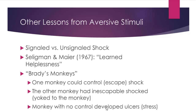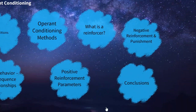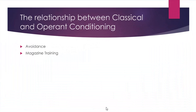Now, some lessons learned from exposure to aversive stimuli lead us to the relationship between classical and operant conditioning. To review the differences: classical conditioning involves reflexive behavior; operant conditioning involves behavior under the animal's or person's control that determines consequences. Classical conditioning involves an association between two stimuli; operant conditioning involves an association between a response and some stimulus or consequence. The reality is that for many real-world behaviors, both can co-occur.